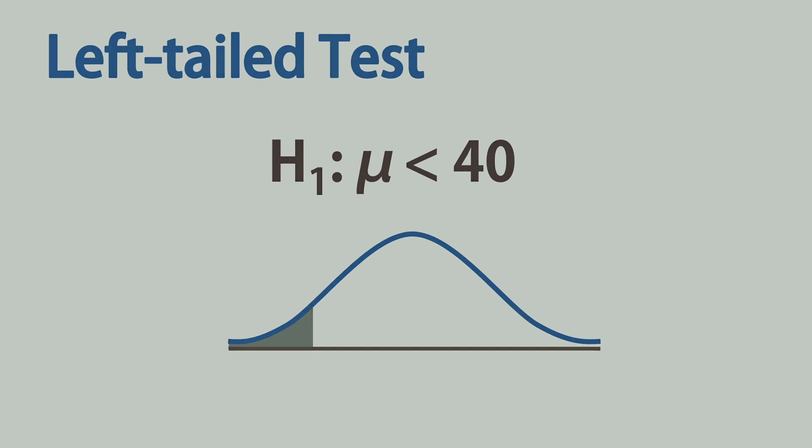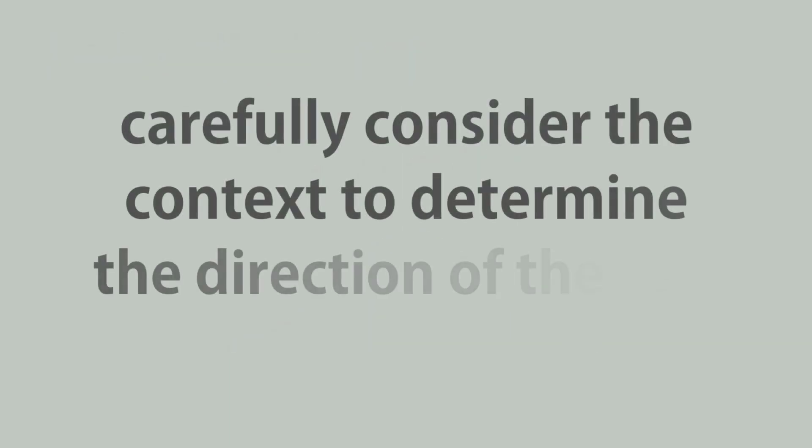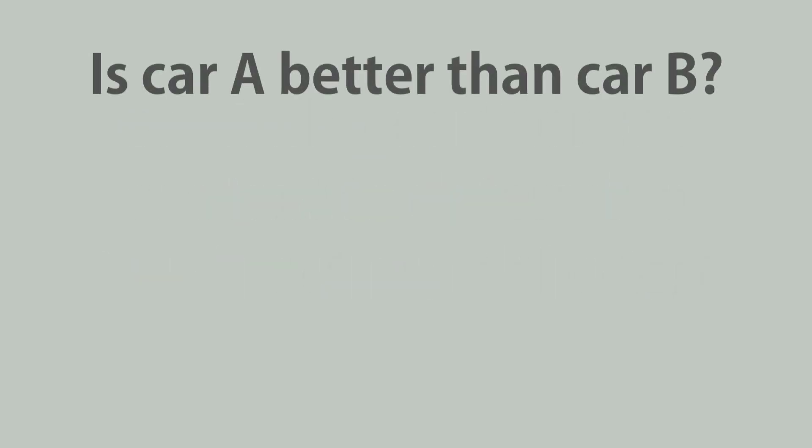Note that the direction is not always immediately clear based on the wording of the problem. In some cases, you need to carefully consider the context to determine the direction of the test. For example, suppose we wanted to test if car A is better than car B. It could be that car A covers more distance than car B given the same amount of time, in which case we will write A greater than B for distance covered.